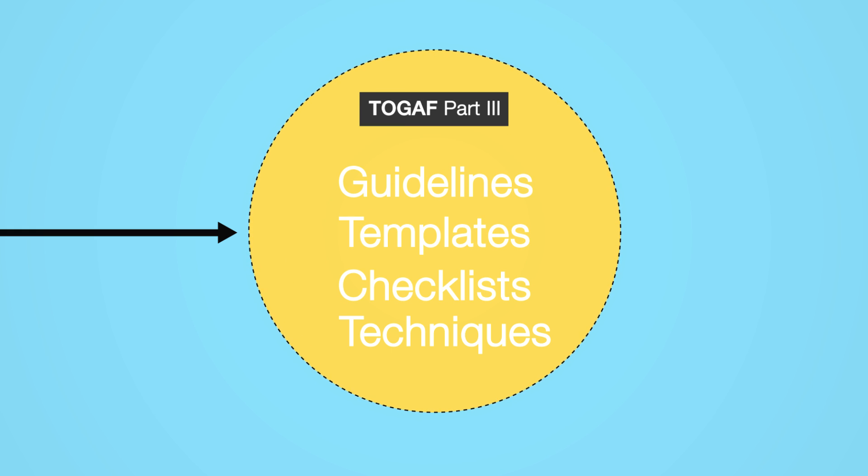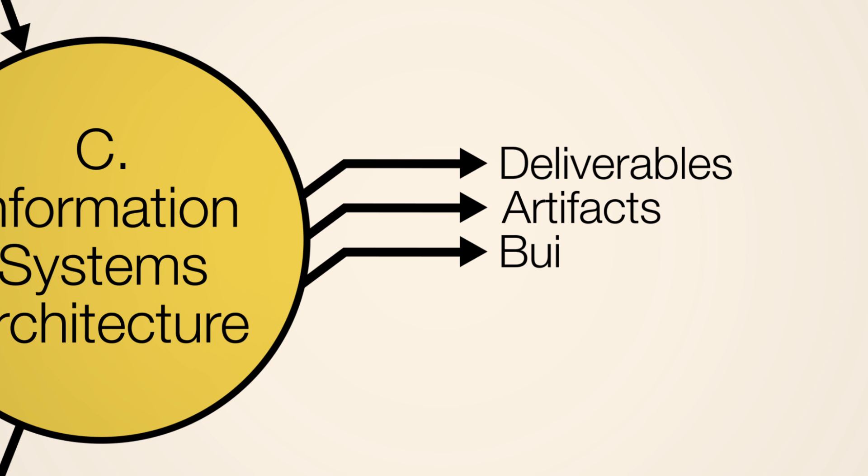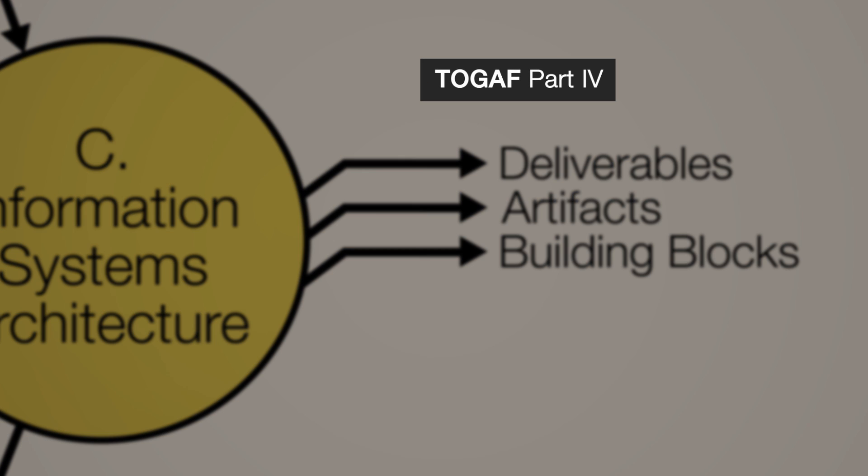They're referenced from the ADM without the detailed text cluttering the ADM itself. Following the ADM produces content in the form of deliverables, artifacts and building blocks, described in Part 4 of TOGAF.